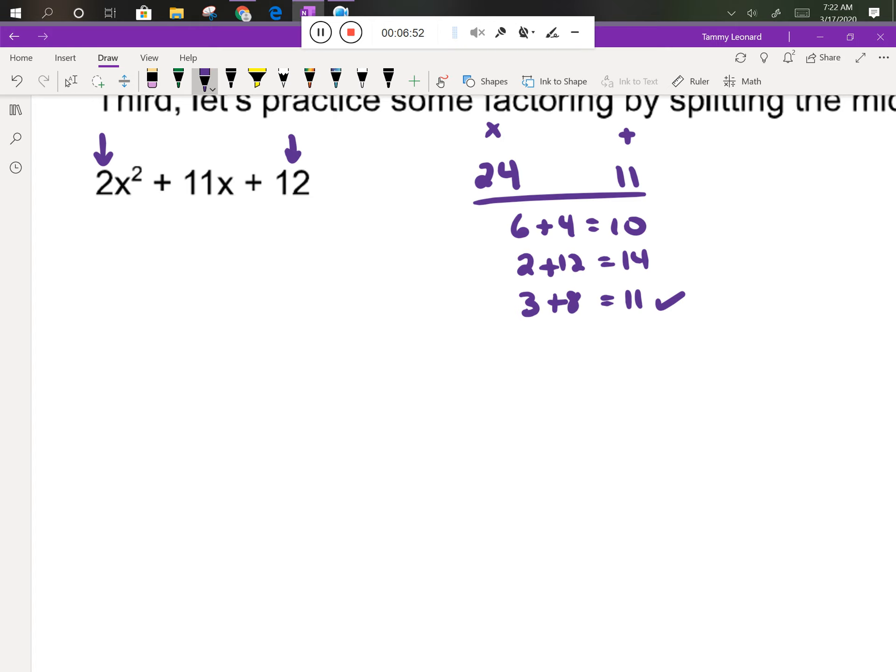So I'm going to use the 3 and the 8 to split the middle term. So remember, my first term stays the same, 2x². I split the middle term according to these two numbers. So instead of writing 11x, I'll write 3x + 8x, which happens to equal 11x. And then my last term comes down. So we've actually done the step that's called splitting the middle term.